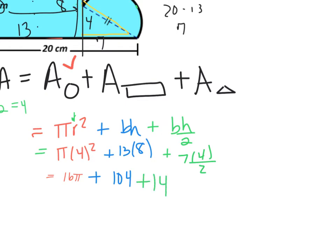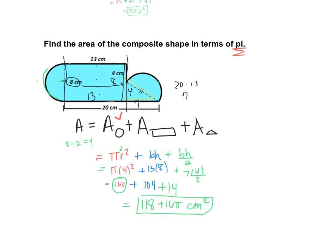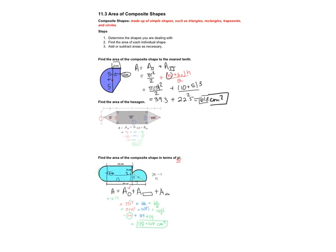Base is 7 and height is 4. So 7 times 4 divided by 2. And I get 14. I type this into my calculator. Remember, we never type the pi key. So we're just going to leave this as is. And we get 104 plus 14 is 118. So my final answer is 118 plus 16 pi centimeters squared. That is your final answer. Again, these are composite shapes. You're just finding the area of the whole.